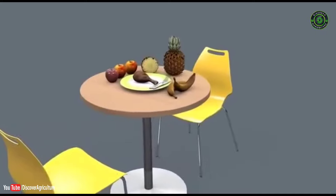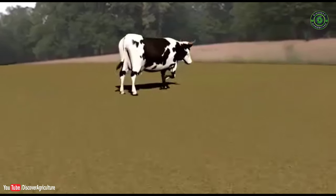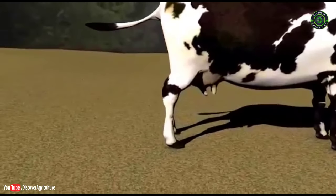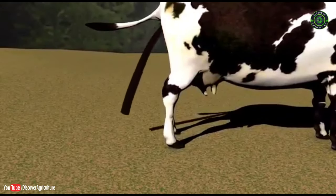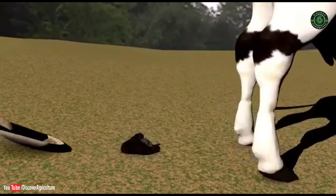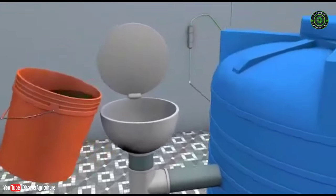Biogas is a type of fuel that is produced from the anaerobic decomposition of organic waste such as food scraps and animal waste. When input feeds such as cow dung are collected, they are mixed with water and introduced into the biogas digester through the inlet funnel.